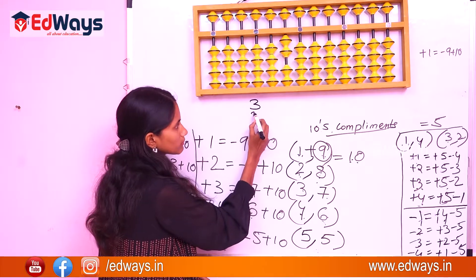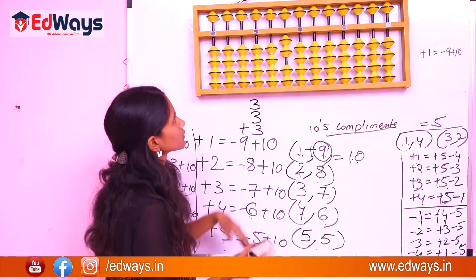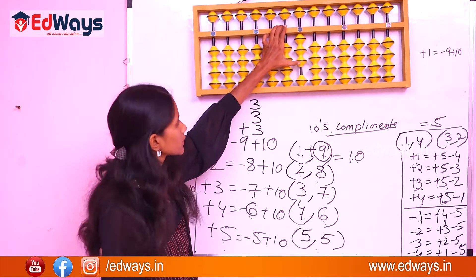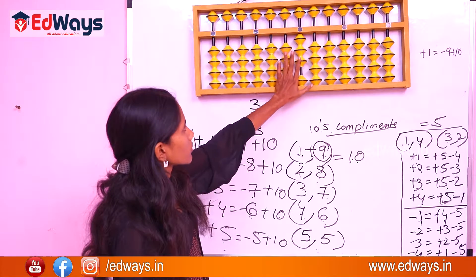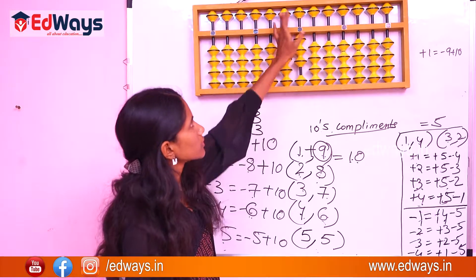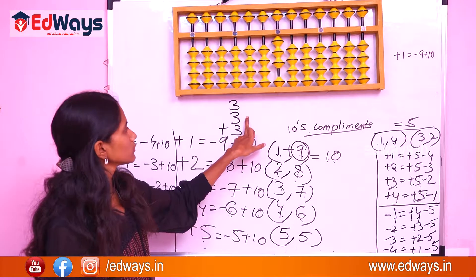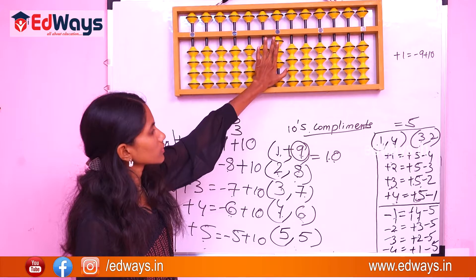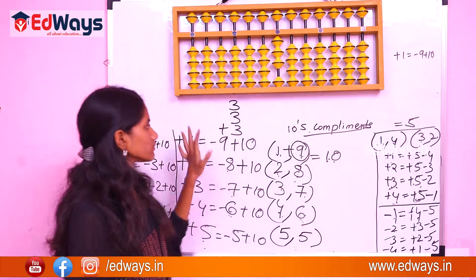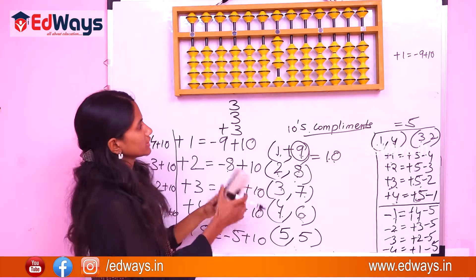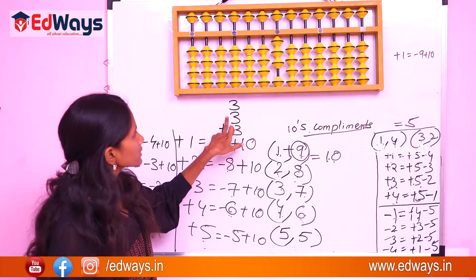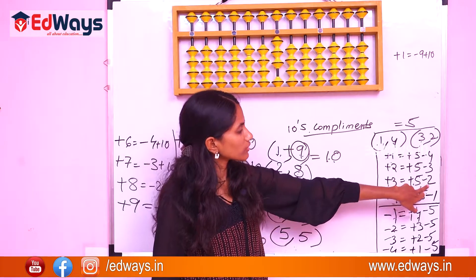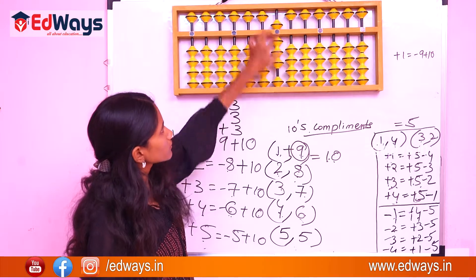Another example: 3 plus 3 plus 3. First 3: add 3 beads up directly — available. Now the next plus 3: only 1 bead is available, so try fives complement. Plus 3 equals plus 5 minus 2. Is 5 available? Yes — add 5 and subtract 2. Now add the third plus 3: is it directly available? No. Try fives complement — plus 5 is not available. So go to tens complement: plus 3 equals minus 7 plus 10. Subtract the complement and add 10. The answer is 9, then 12.